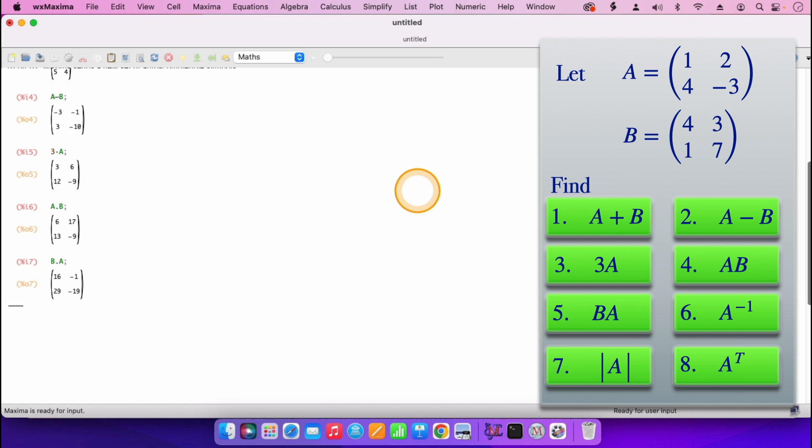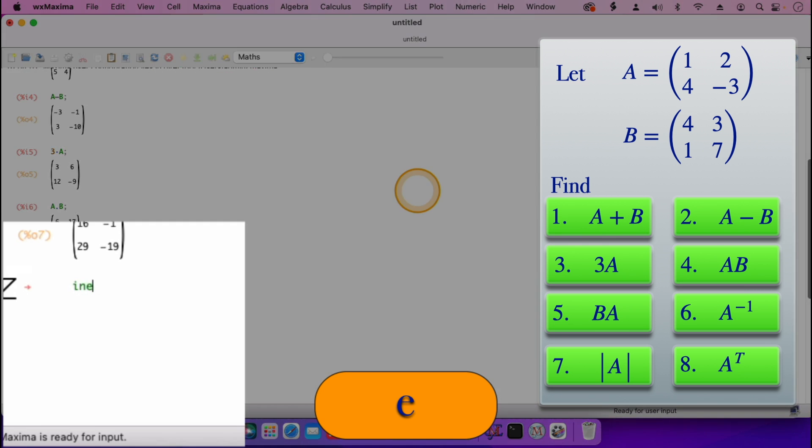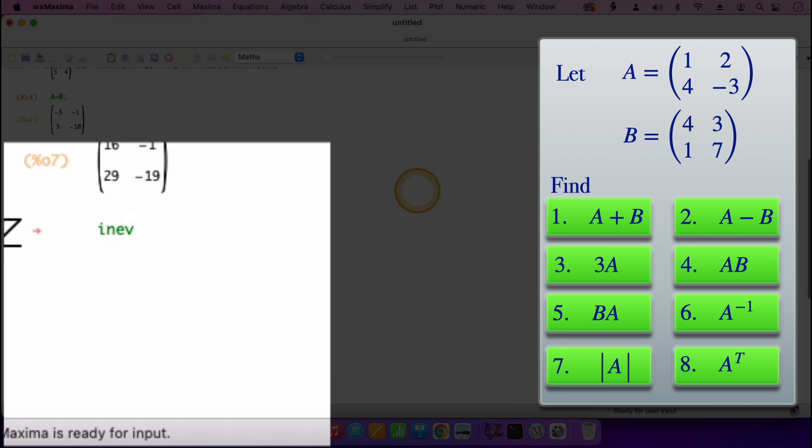Now on question number six, the inverse of the matrix A. For the inverse of the matrix A, you can just type invert. So we are inverting the matrix A, and I'll press shift enter. So the inverse of the matrix A is 3 over 11, 2 over 11, 4 over 11, minus 1 over 11.